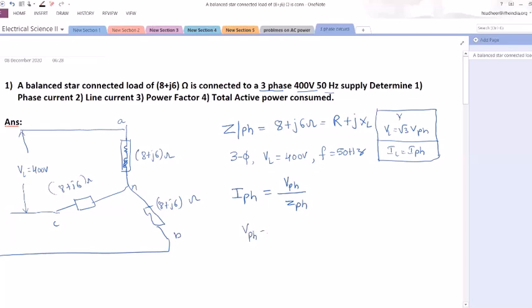Vphase is equal to VL by root 3. VL is 400 volts divided by root 3. So always you need to have a calculator when you are doing your problems with respect to electrical side. So 400 by root 3, I am getting 230.94 volts. I got phase voltage.